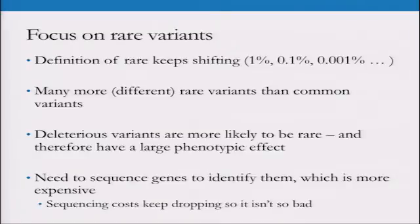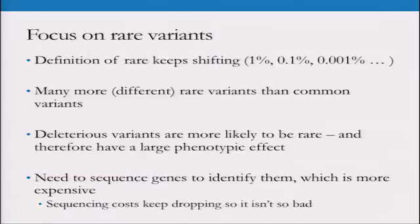When I say rare variation, that's kind of been a sliding window. Back in the day it used to be less than 5% minor allele frequency. Now it's sliding down to one, or a tenth, or a hundredth of a percent. The main point is that if you take a large collection of individuals, you're only going to see a variant from the reference at that location once or twice in thousands of people — these are ones you can count on your hands.